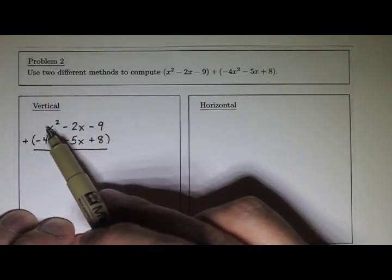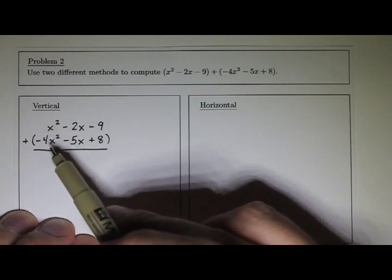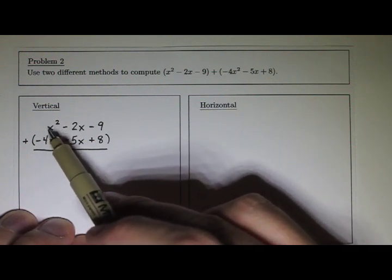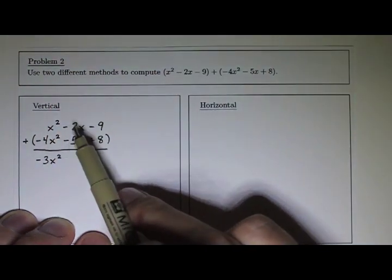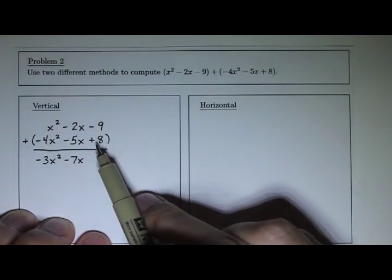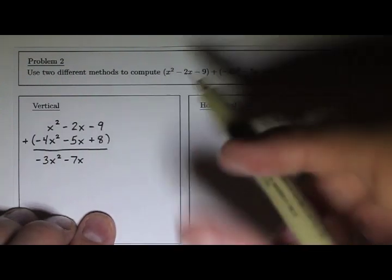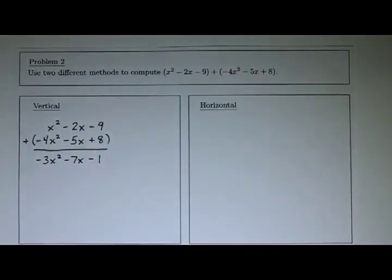Negative 4 plus—there's really 1x squared here, we don't write the 1, but it's there—so minus 4 plus 1 is negative 3x squared. Then negative 5 plus negative 2 is negative 7x. And positive 8 plus negative 9 is negative 1. So there's my answer: negative 3x squared minus 7x minus 1.